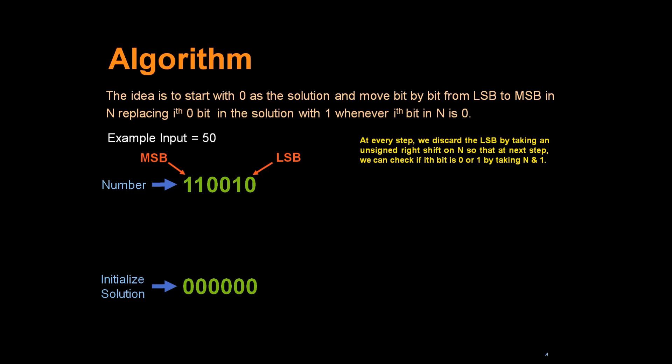At every step, we discard the LSB by taking an unsigned right shift on N, so that at next step we can check if ith bit is 0 or 1 by taking N and 1.